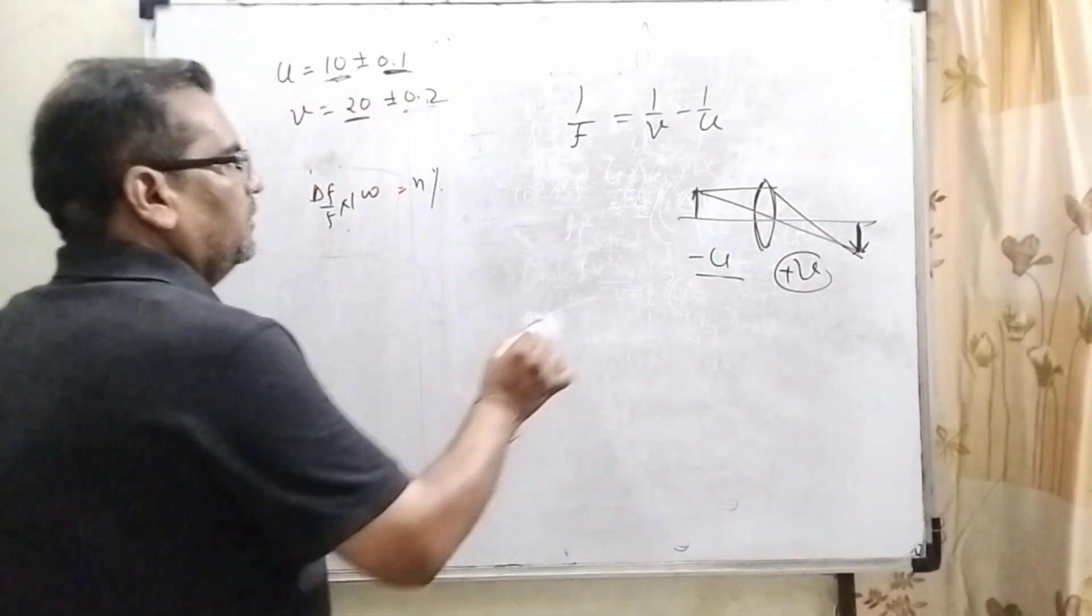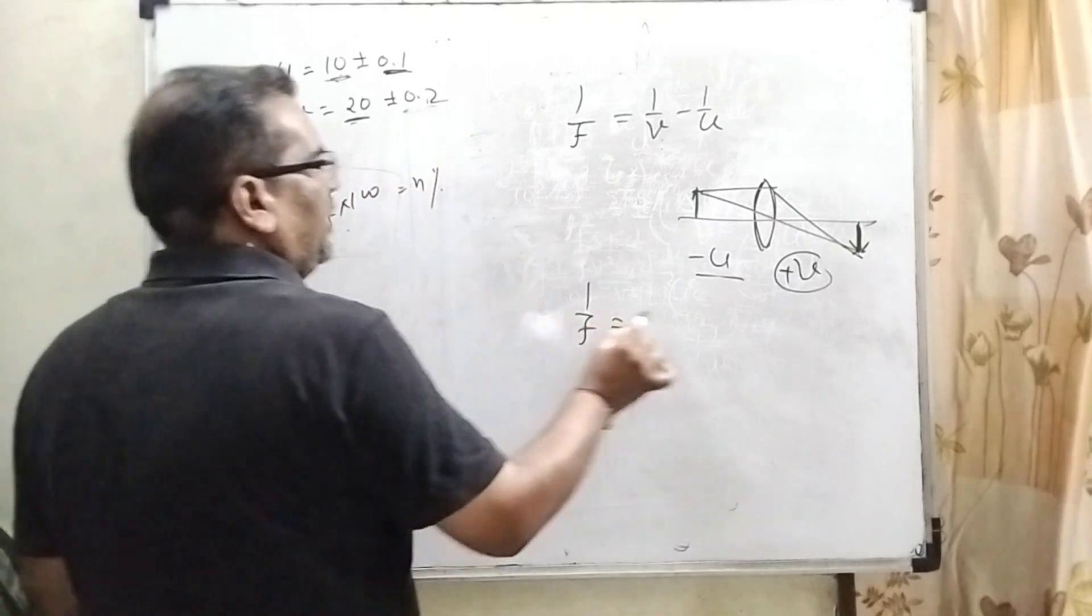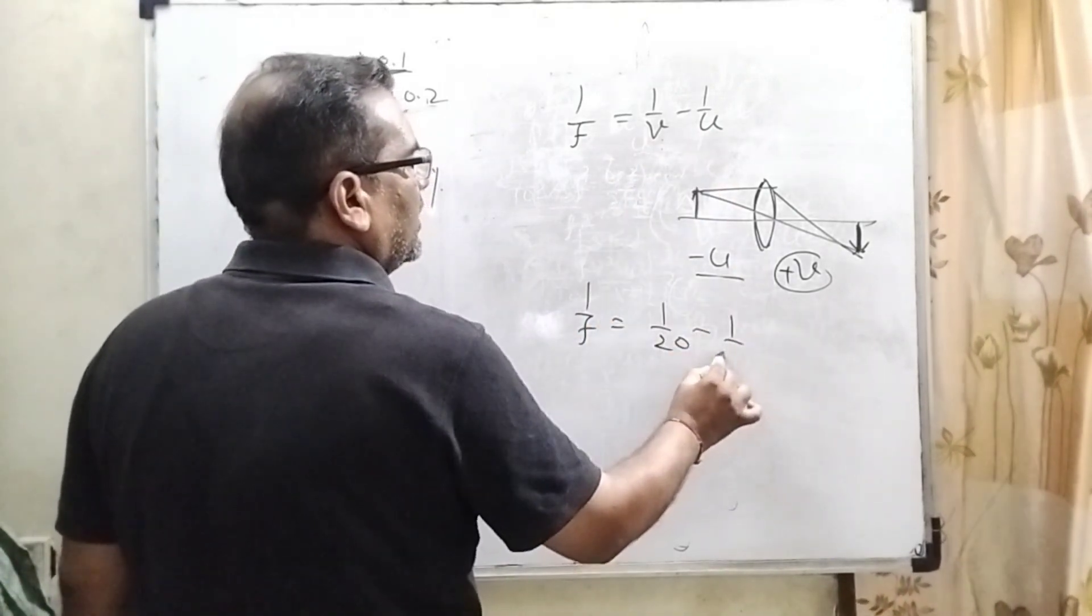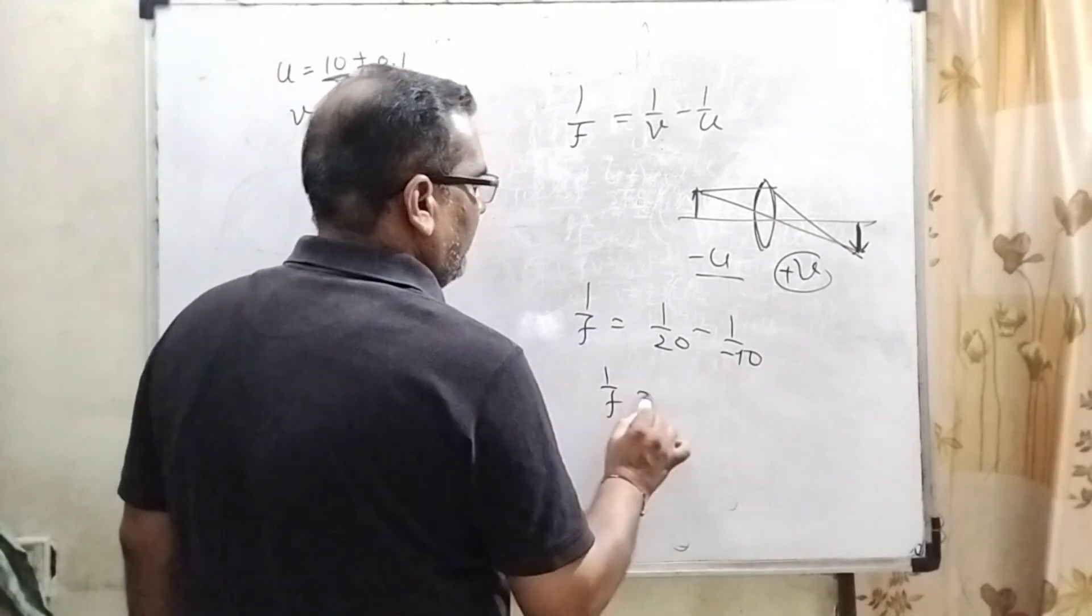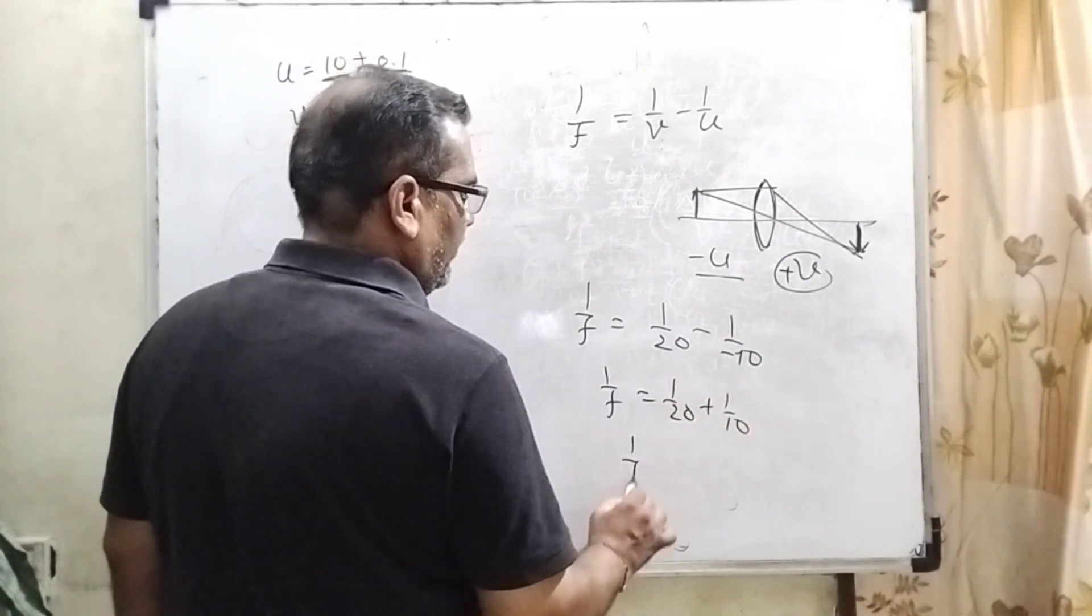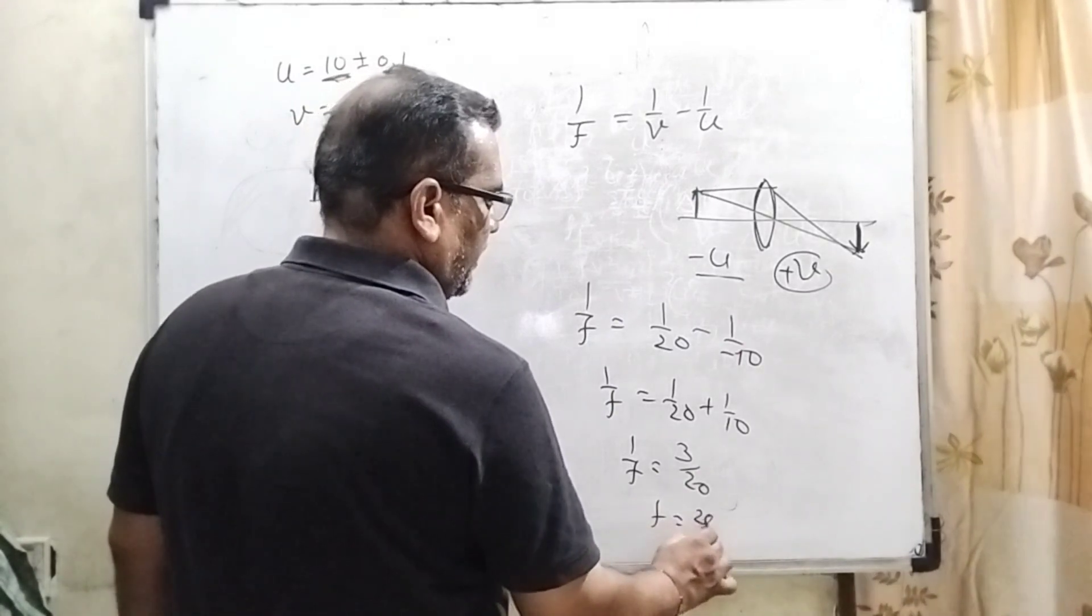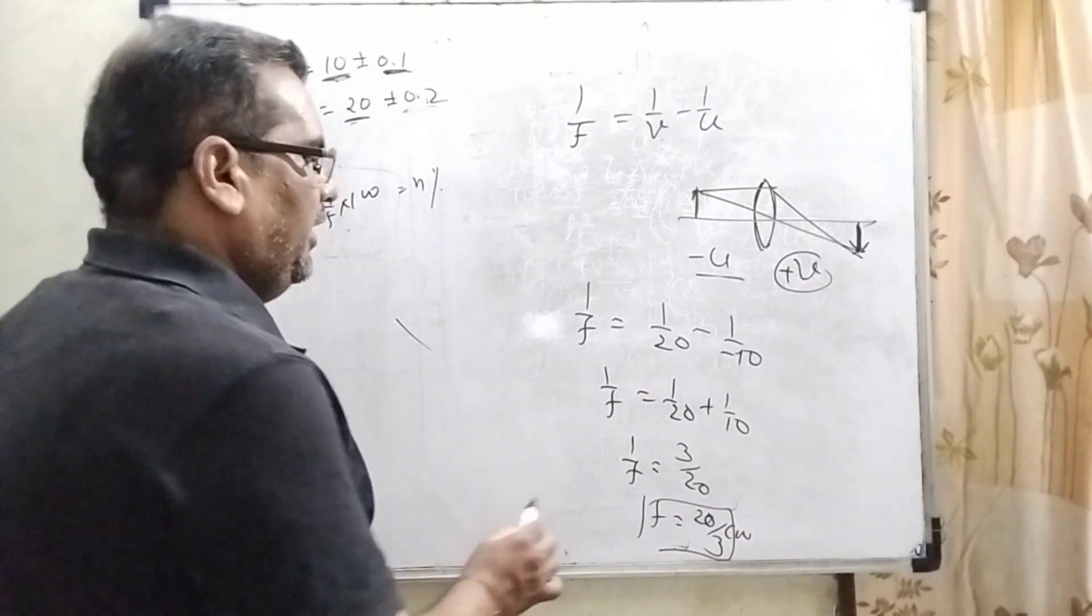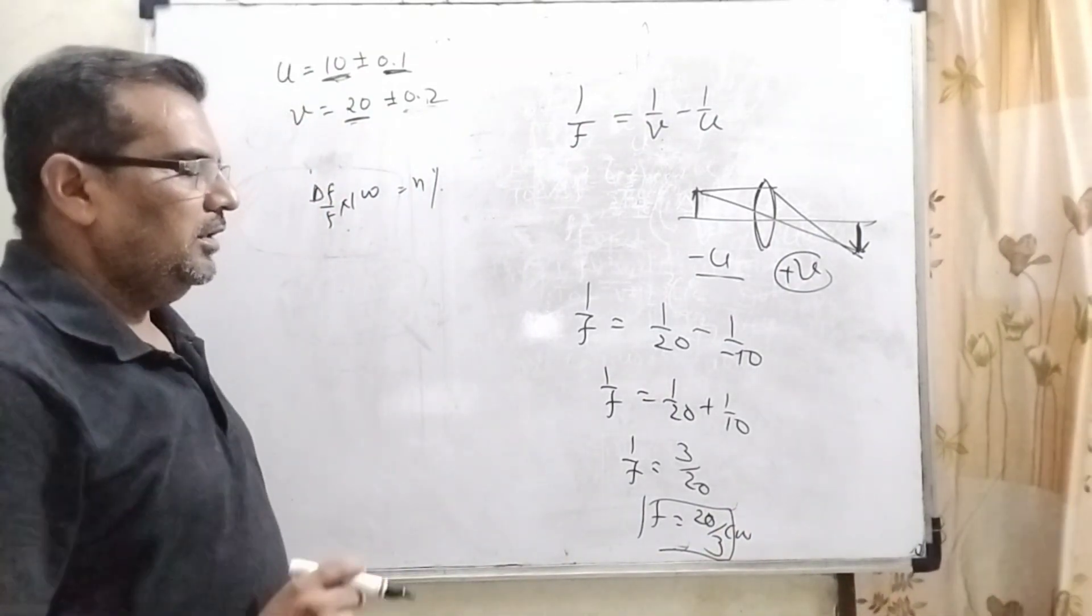So what are the real values? The real value of v is 20, and the value of u is -10. Then 1/f = 1/20 - (-1/10) = 1/20 + 1/10. Then f = 20/3 cm. This is the real value.